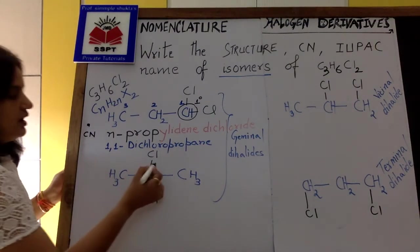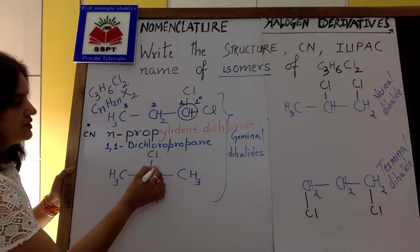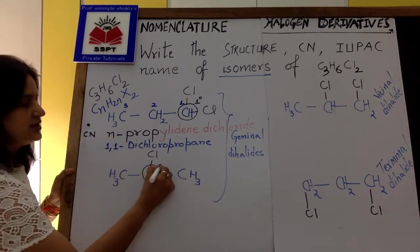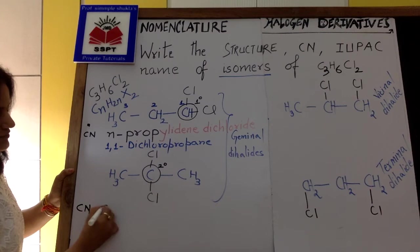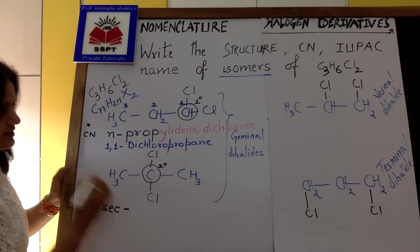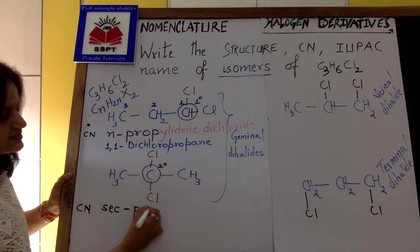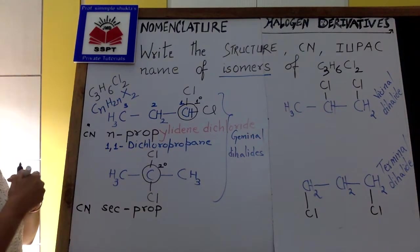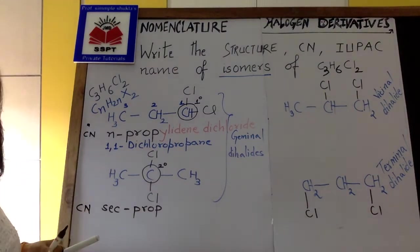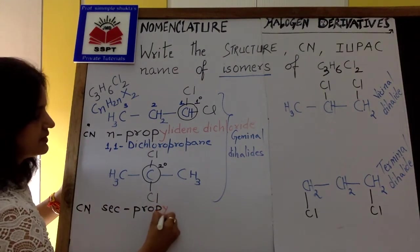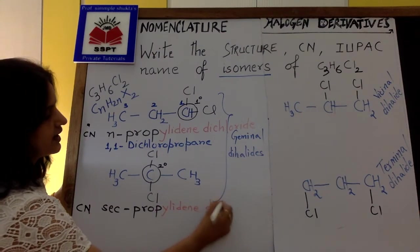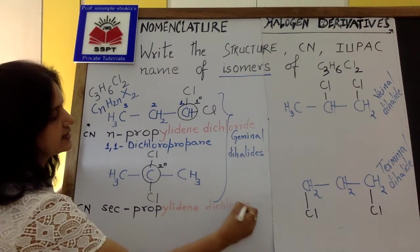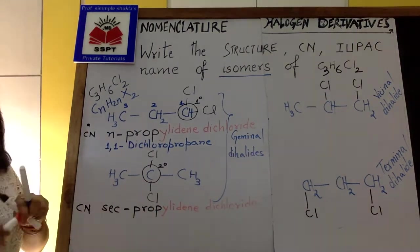Next structure. We locate. Halogen is on a two degree carbon. Hence, the common name prefix is sec. Again, number of carbons in the chain is prop. The two halogens are on the same carbon. So the suffix remains same. Illidine. Propylidine dichloride.